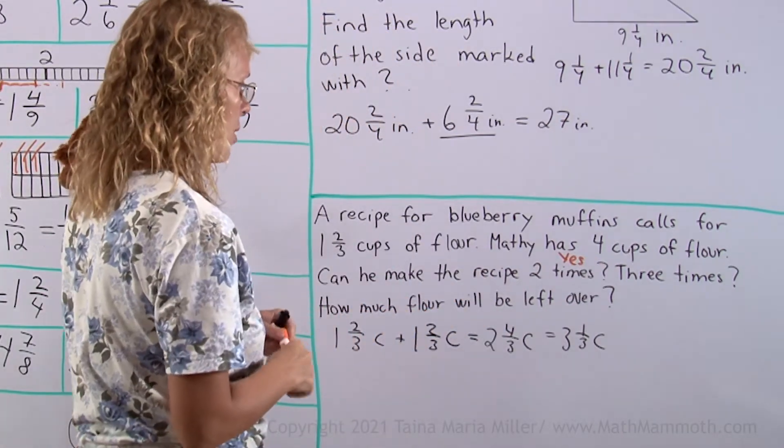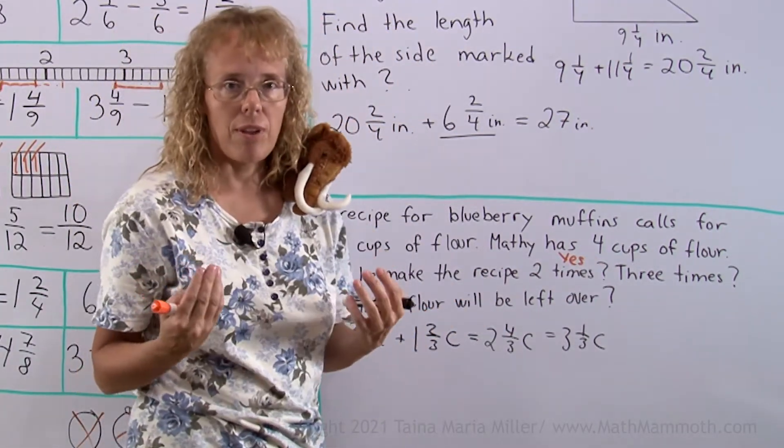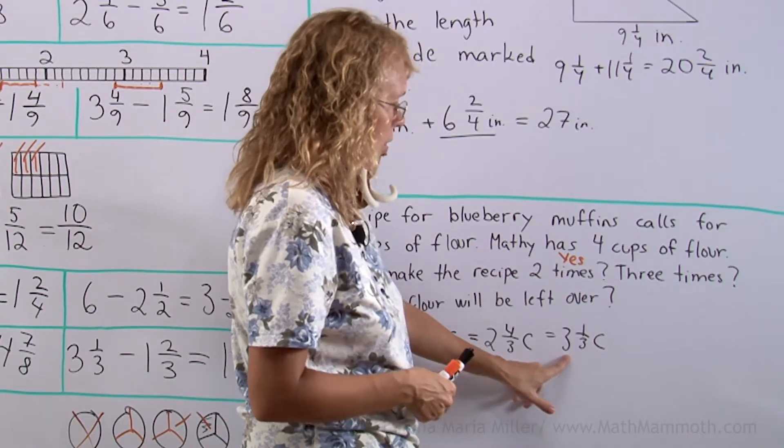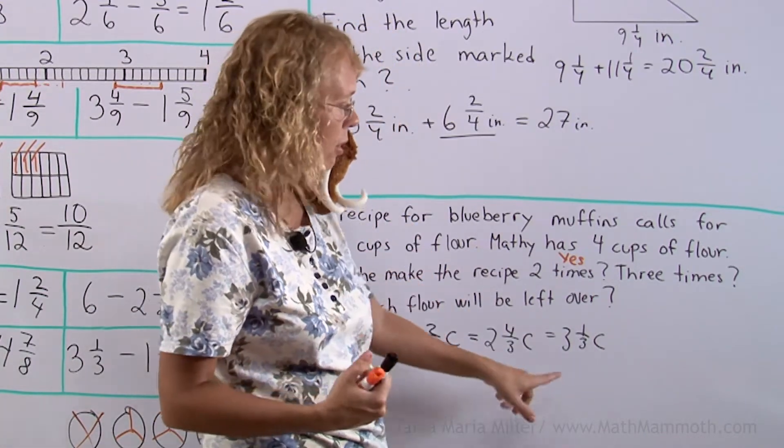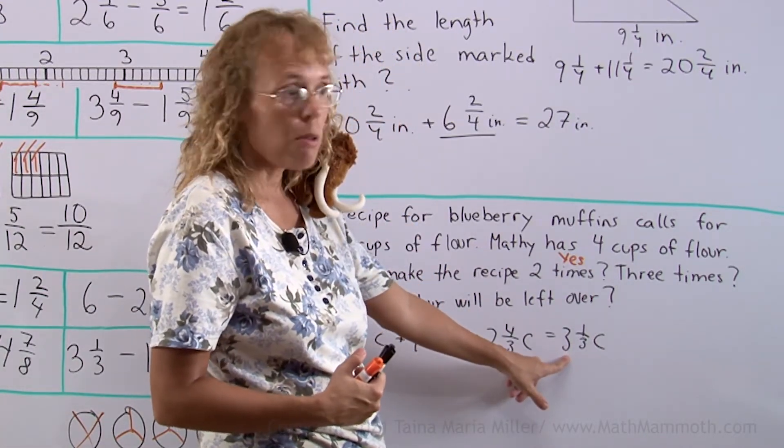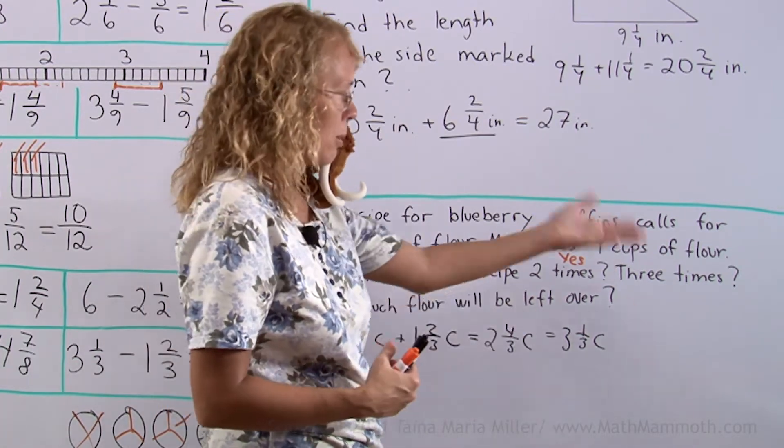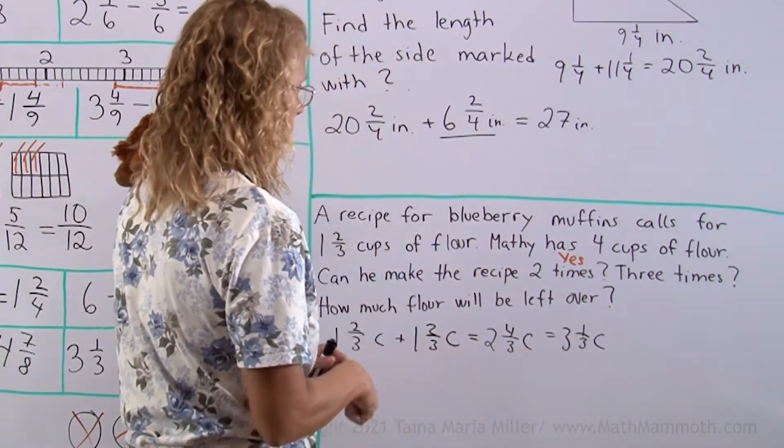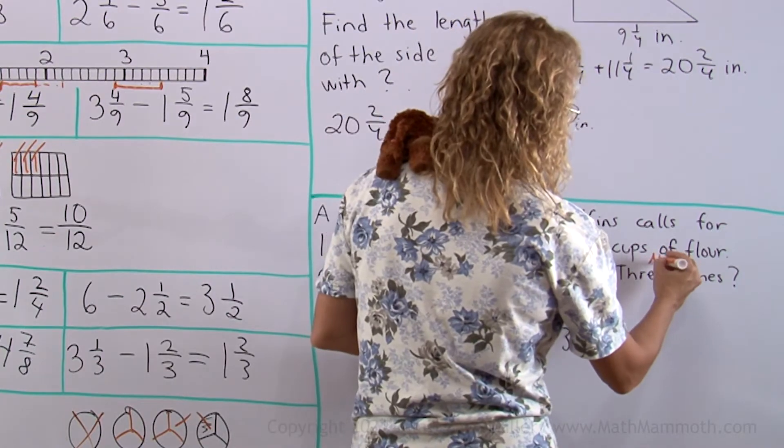Could he make it three times? He has 4 cups of flour. And look, for two times the recipe, he already uses more than 3 cups of flour. So he cannot make it one more time. Okay? No, he cannot make it three times.